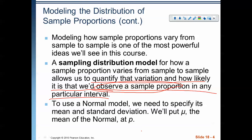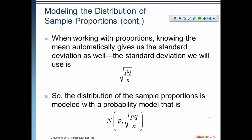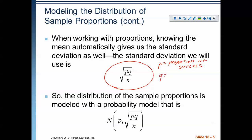To use a normal model, we need to specify its mean and standard deviation. The mean is p — it's centered there. The standard deviation, however, is a bit different: when working with proportions, knowing the mean gives us the standard deviation. It is the square root of p times q divided by n, where p is the proportion of success, q is the proportion of failure, and n is the sample size.